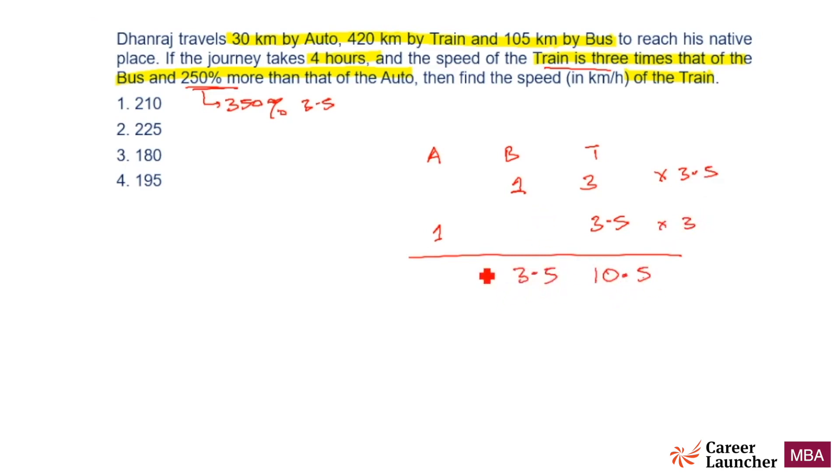It becomes 10.5, so speed of bus should be 3.5, speed of auto should be 3. This means the speed of the train should be a multiple of 10.5 or 105. This should be the answer.